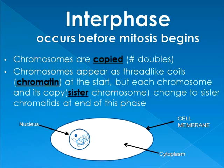That's normally when we can start to see the chromosomes under a microscope. Each chromosome and its copy — the sister chromosome — are now called sister chromatids at the end of this phase. So you start off with a single chromosome; they're being copied, and at that stage it's now called sister chromatids.